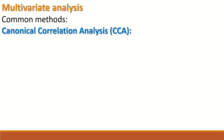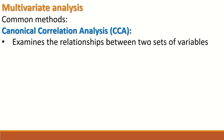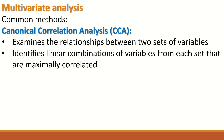Another type of multivariate analysis is canonical correlation analysis, abbreviated as CCA. It examines the relationship between two sets of variables and aims to identify linear combinations of variables from each set that are maximally correlated.